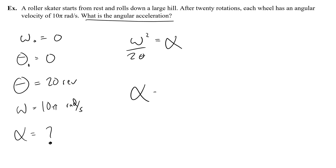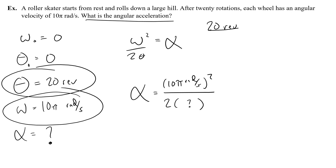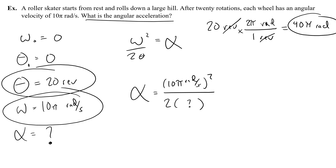Before using these numbers, I have to convert revolutions to radians, because the angular velocity is in radians per second. Using a factor label: 20 revolutions times 2 pi radians per revolution gives 40 pi radians. So my angular position theta is 40 pi radians, and I put that in the denominator: omega squared on top is (10 pi) squared, and on the bottom is 2 times 40 pi radians.